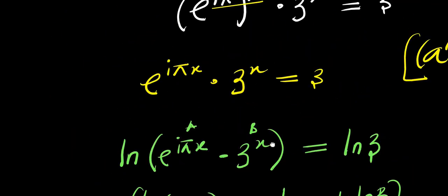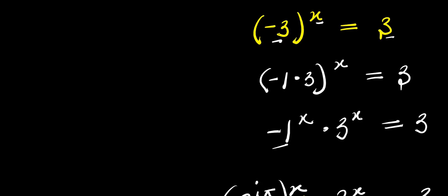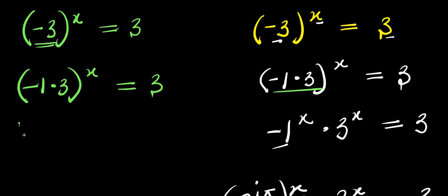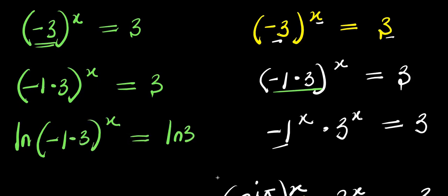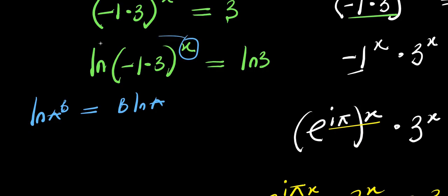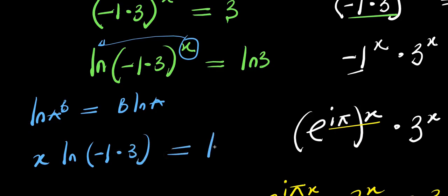Now let's consider another method of solving this exponential problem. We have negative 3 to the power x equals 3. I again replace negative 3 with negative 1 times 3, raised to the power x, equals 3. Now I can simply apply the natural log: natural log of negative 1 times 3, raised to the power x, equals natural log of 3. Using the rule that natural log of a to the power b equals b times natural log of a, the x comes forward: x times natural log of negative 1 times 3 equals natural log of 3.